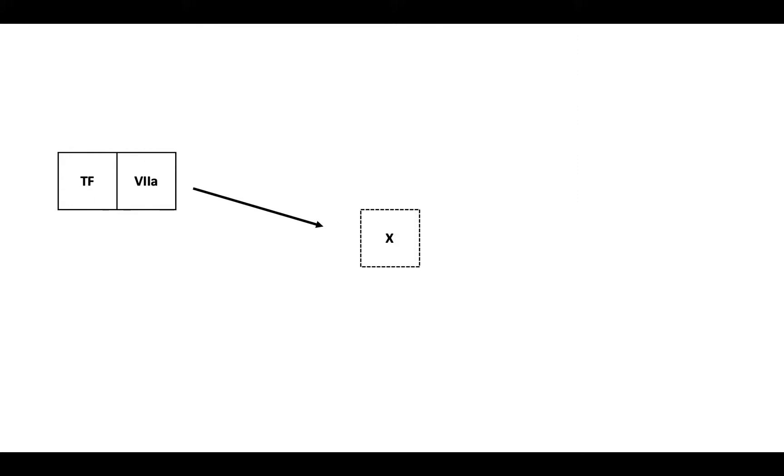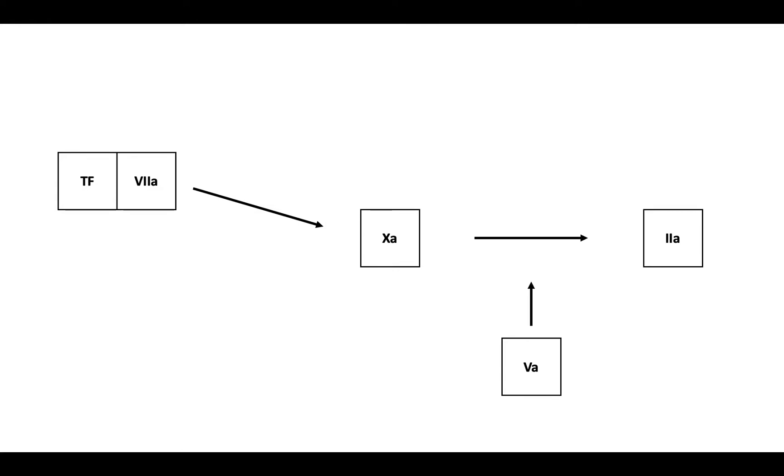Let's revisit a simplified version of the coagulation cascade, starting with the extrinsic pathway factor, tissue factor. Tissue factor complexes with factor 7, activating it to 7a. The tissue factor-factor 7a complex activates factor 10 to 10a. Then 10a, together with its cofactor 5a, works to activate prothrombin to thrombin.